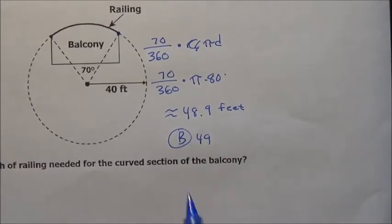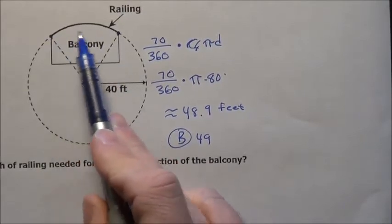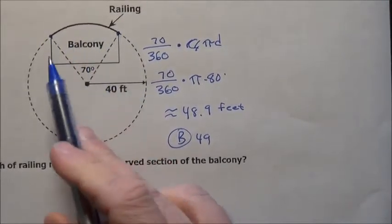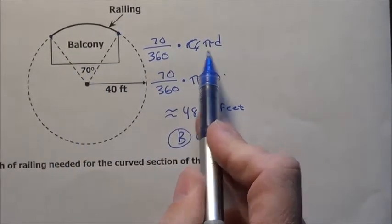Very good problem there. But again, once you see a circle, and they're taking a fractional part of it, wanting to know a fractional part of the length, or a fractional part of the area, you just write that out of 360 times, in this case the circumference.